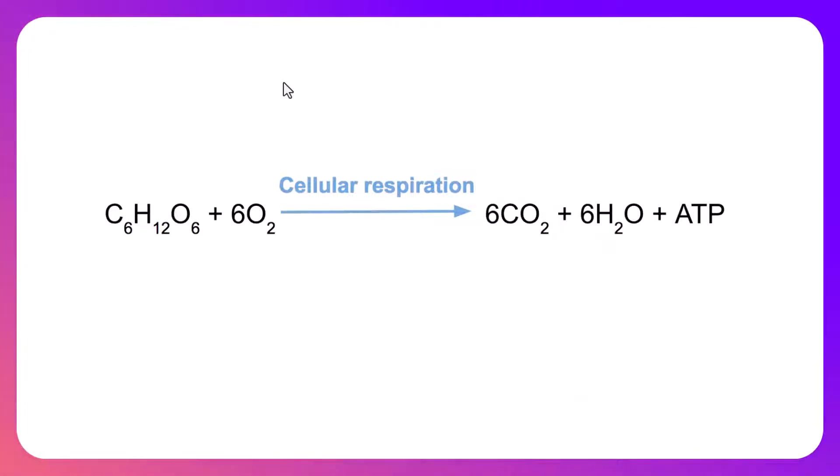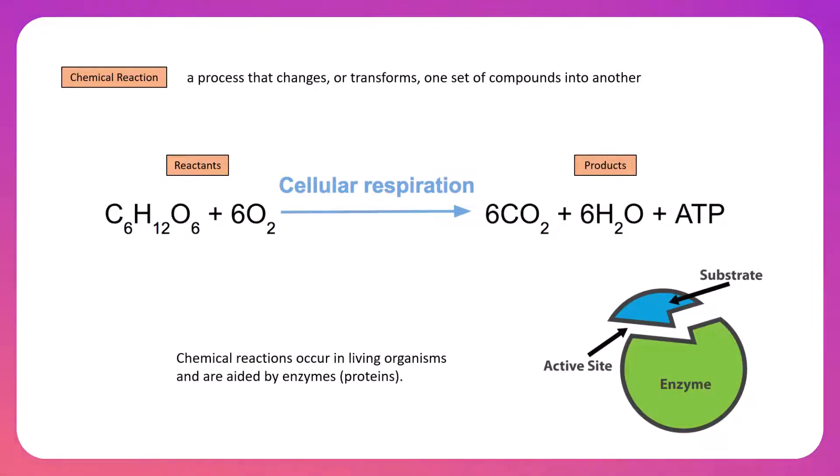To start with, we can look at this chemical reaction. And just as a reminder, a chemical reaction is any process that changes or transforms a set of compounds into another set. So in a chemical reaction, we have reactants and products. Usually, we have the reactants on the left side and the products on the right side. As you can see here, your reactants for cellular respiration would be glucose, which we learned about in our carbohydrates discussion, and oxygen. And those work to create our products, which in this case would be carbon dioxide, water, and energy, or ATP.